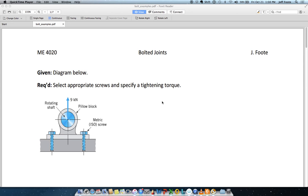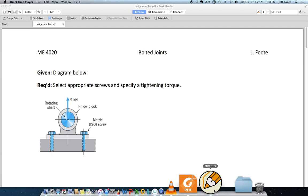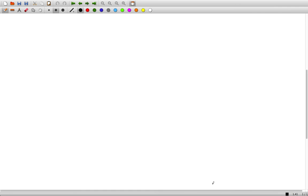We're going to have to make a number of assumptions in this particular problem. But the first one is I'm going to assume that each bolt takes half the load, that is that the tensile load is evenly distributed between the two bolts shown. Now first thing I have to do is actually choose a grade of bolt.